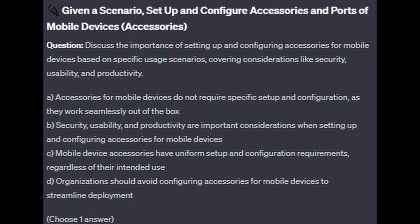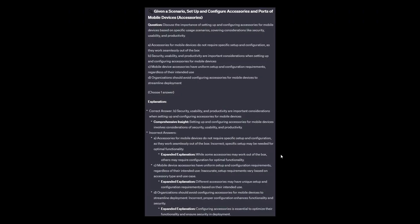Choose one answer. And the correct answer is B: Security, usability, and productivity are important considerations when setting up and configuring accessories for mobile devices. Option A: While some accessories may work out of the box, others may require configuration for optimal functionality. Option C: Different accessories may have unique setup and configuration requirements based on their intended use — setup requirements vary based on accessory type and use case. And Option D: Configuring accessories is essential to optimize their functionality and ensure security and connectivity in deployment — proper configuration enhances functionality and security.